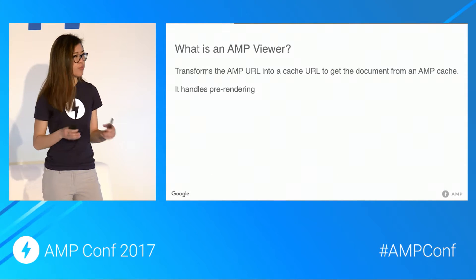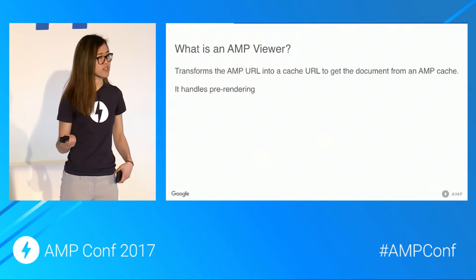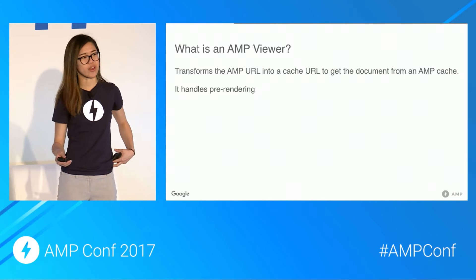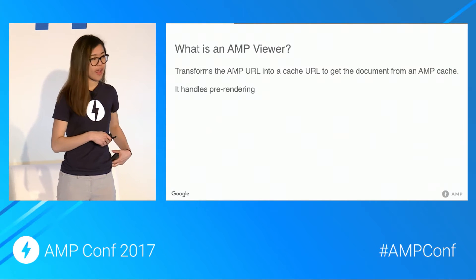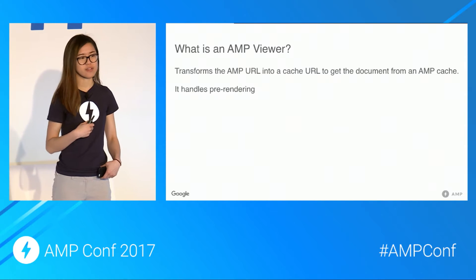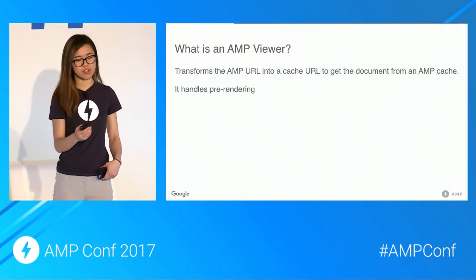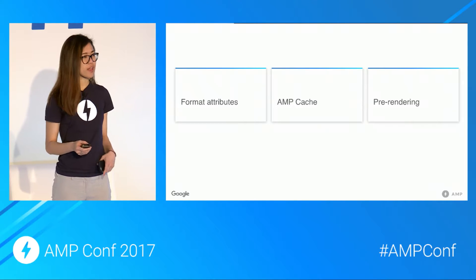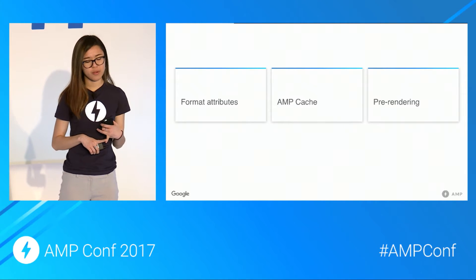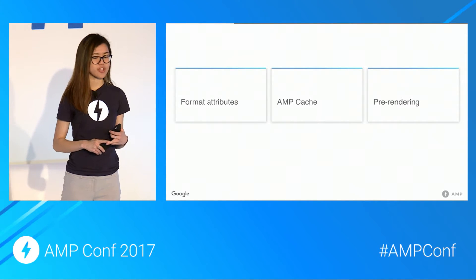What is an AMP viewer? The core parts the AMP viewer has to take care of: it has to talk to the cache, transform an AMP URL into a cache URL and get that AMP document back. On Search, it handles all of the pre-rendering magic that makes that page seem like it just appeared to the user. The three tenets that make this possible are format attributes, the pre-rendering mode of AMP, the AMP cache itself, and our pre-rendering strategy.